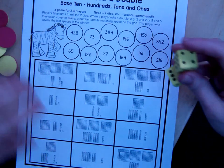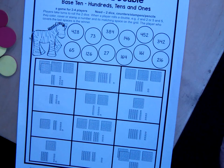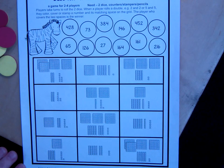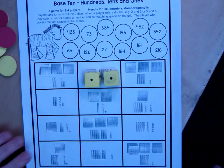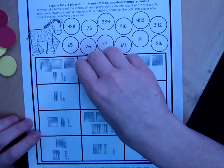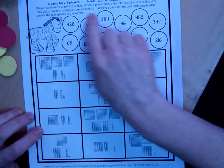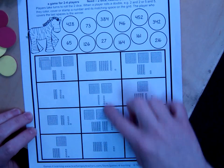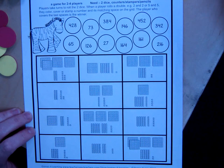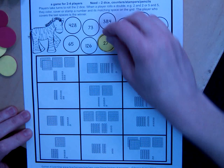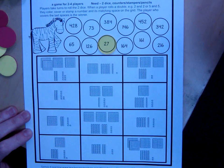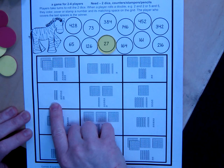Each player takes a turn rolling, and the goal is to get a doubles. Let's pretend I just rolled the double one and one. That means I get to cover up one of these numbers and its matching picture. So, I choose to cover up the number 27. There it is in standard form, and here it is in model form.